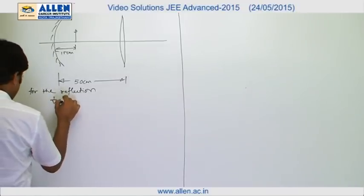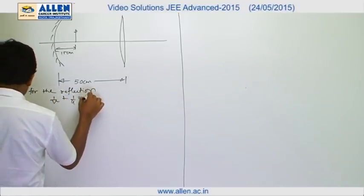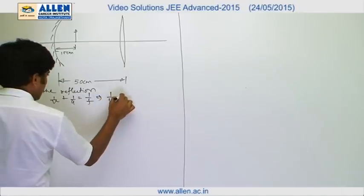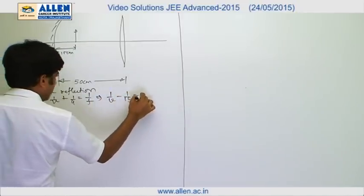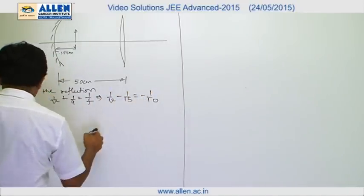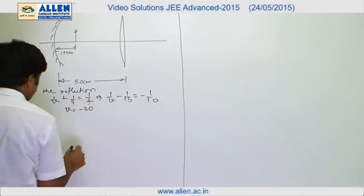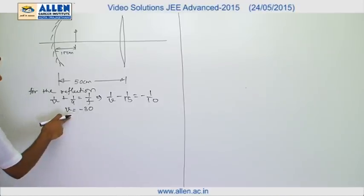1 by v plus 1 by u equals to 1 by f, therefore 1 by v minus 1 by 15 equals to minus 1 by 10. From here we get v equals to minus 30, which is the location of the image formed by reflection due to this mirror.